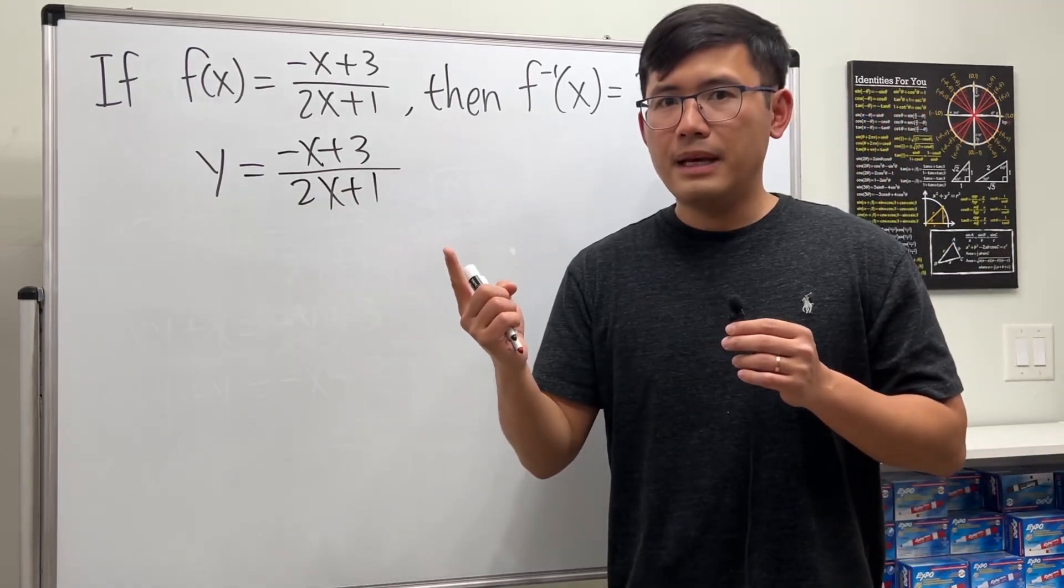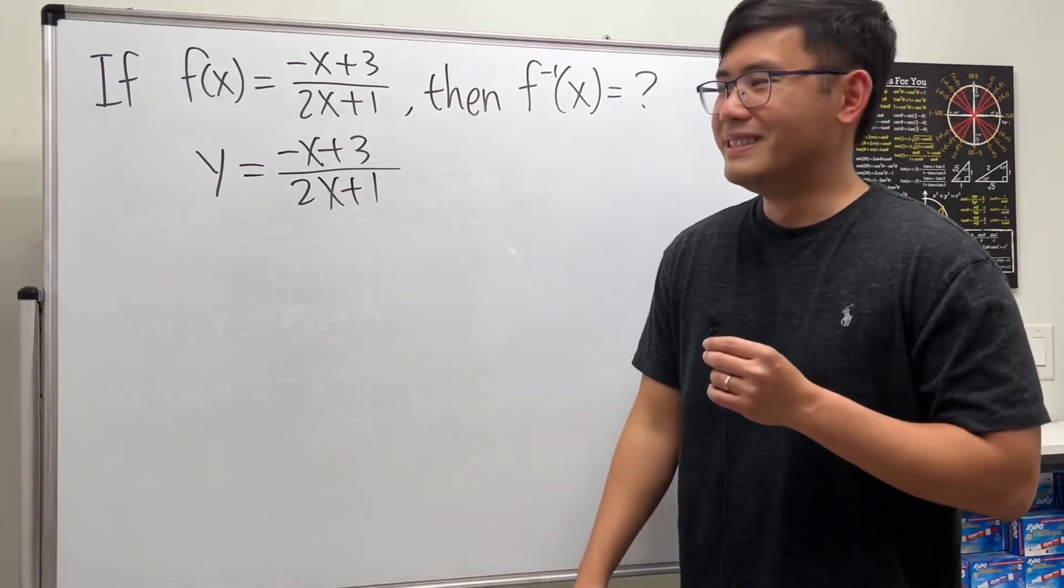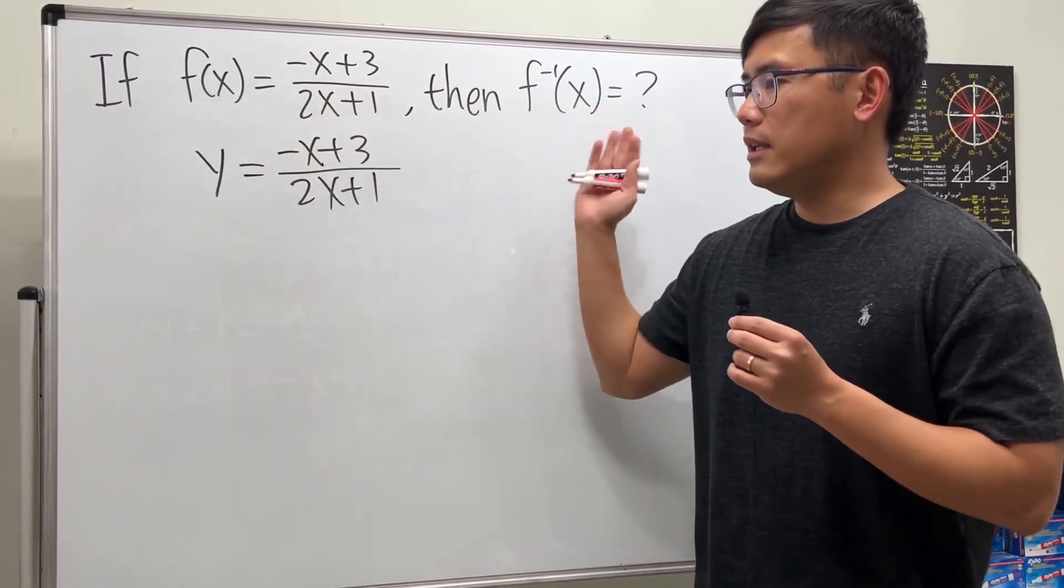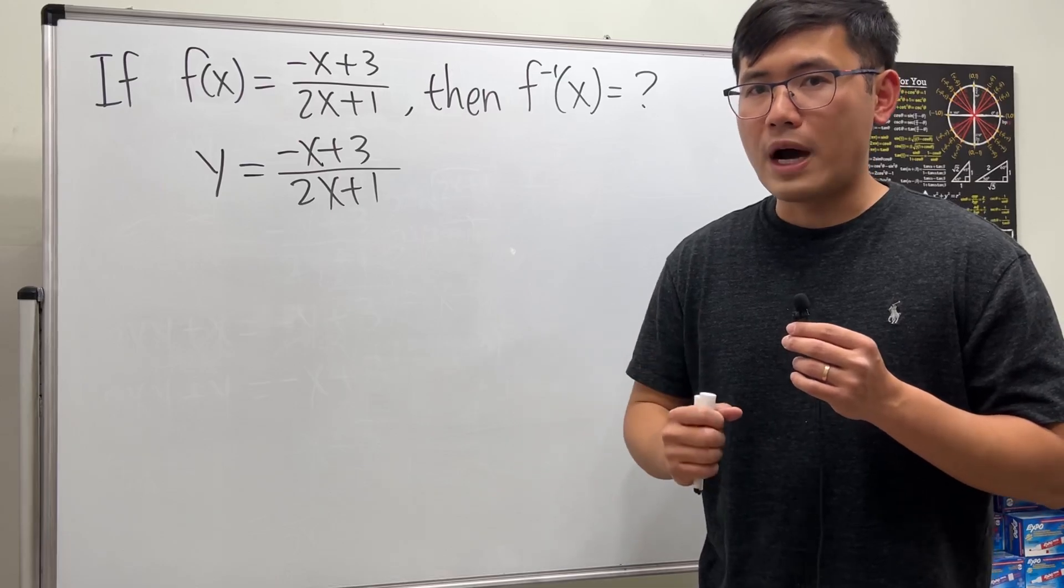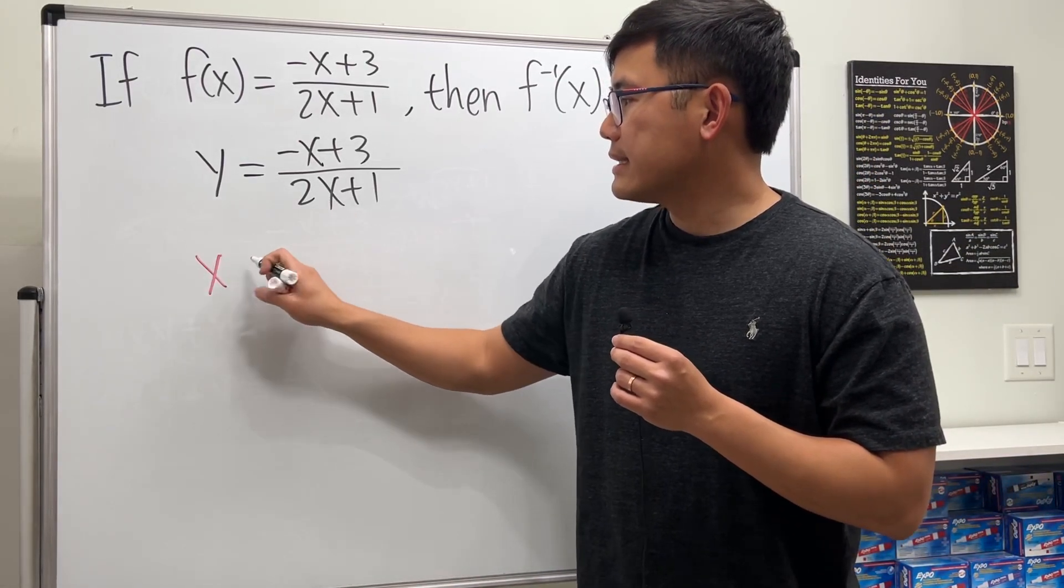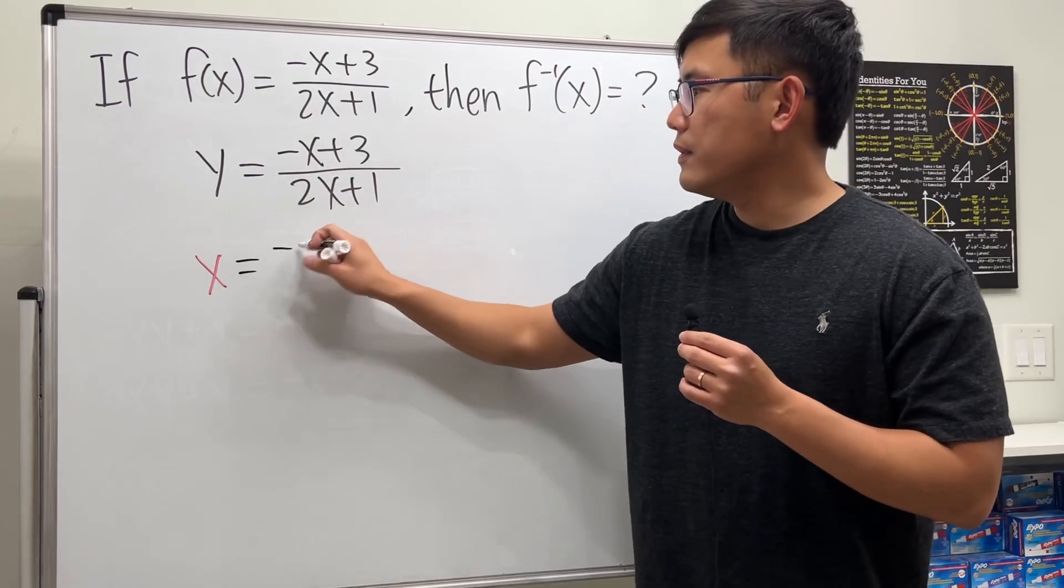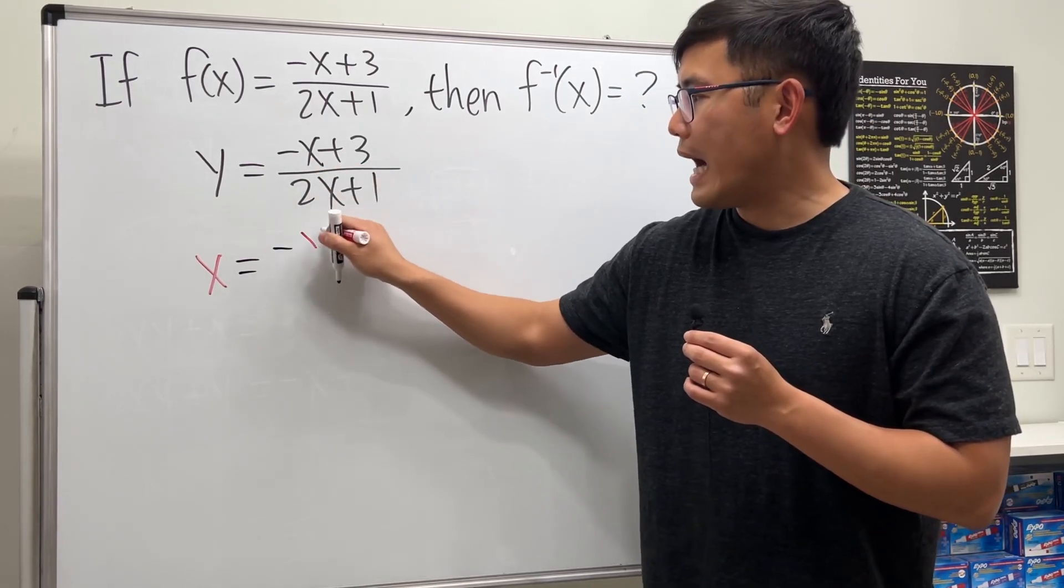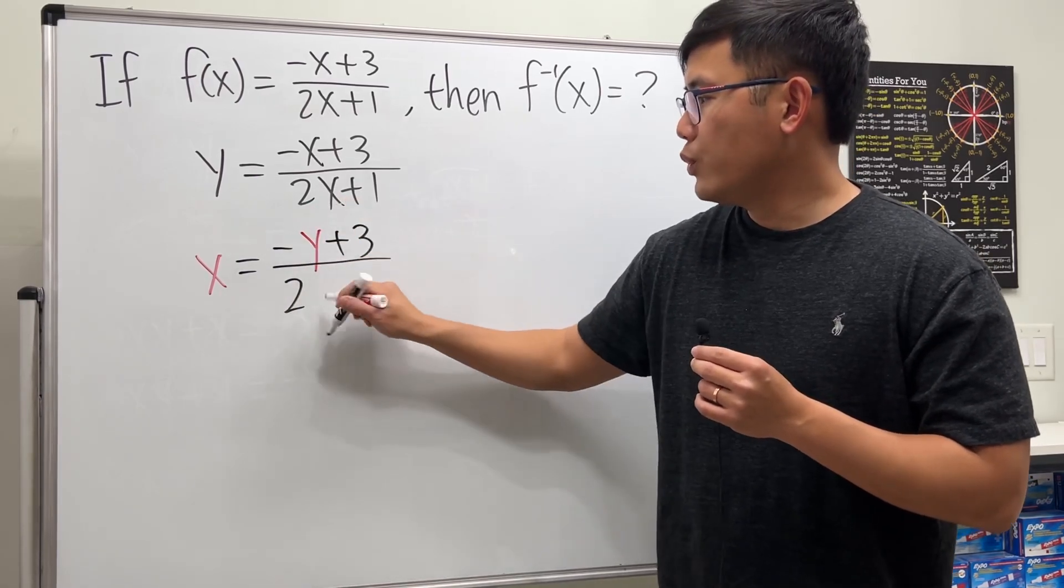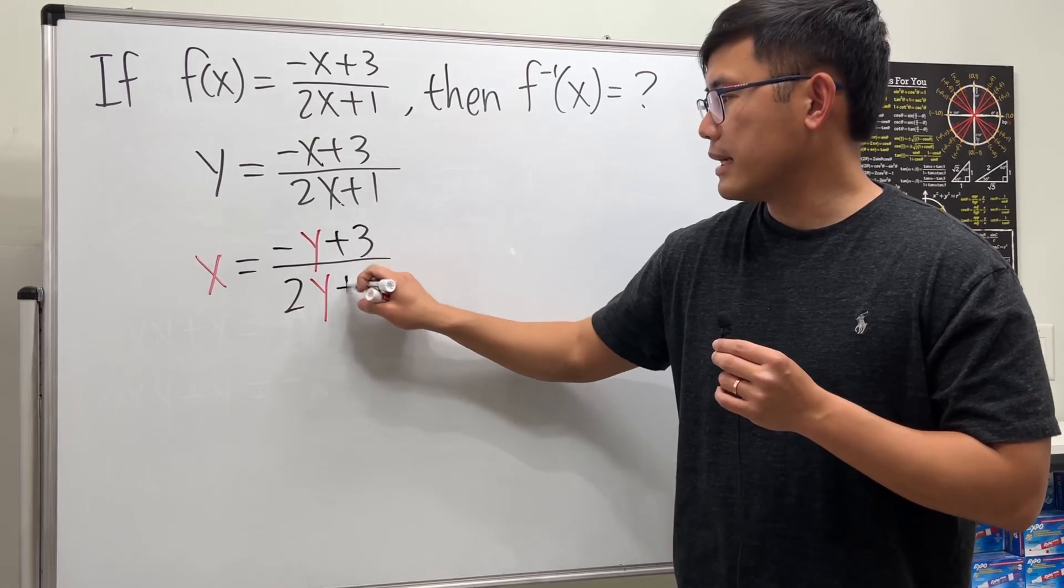Now second step. The idea behind the original and the inverse is that we switch x and y. So right here we will have x, and that's equal to negative y plus 3 over 2y plus 1. That's step 2.